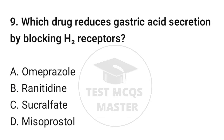Question number nine: which drug reduces gastric acid secretion by blocking H2 receptors? The correct option is B: Ranitidine.